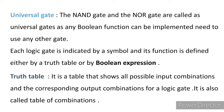Each logic gate is indicated by a symbol, and its function is defined either by a truth table or by a Boolean expression. A truth table is a table that shows all possible input combinations and the corresponding output combinations for a logic gate. It is also called a table of combinations. In digital electronics, inputs and outputs are arranged in binary digits in the form of a table — that is called a truth table.